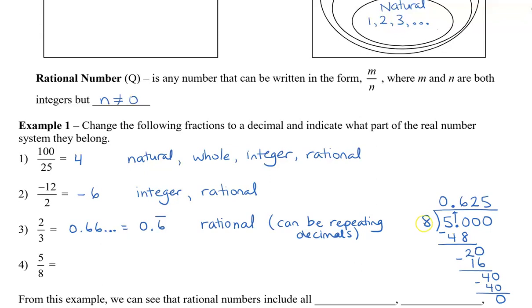So that means that 5 eighths is the same as the decimal number 0.625. Now we can see that's not natural, a whole, or an integer. It is a decimal or a fraction. So that is called a rational number. And this is what we call a terminating decimal.